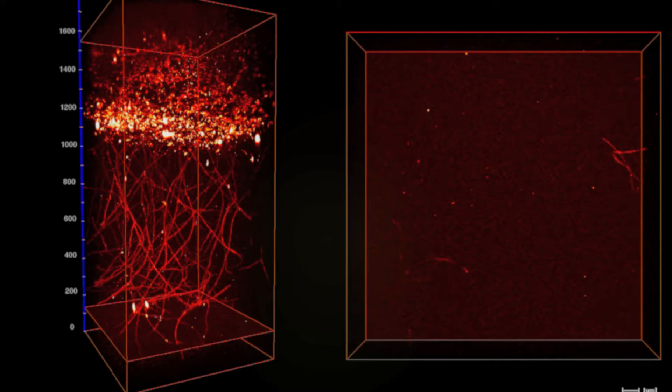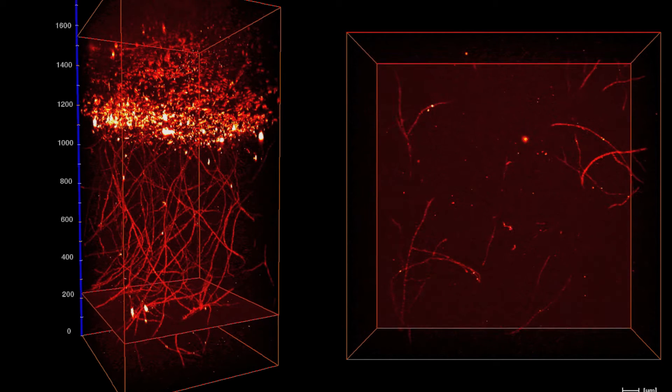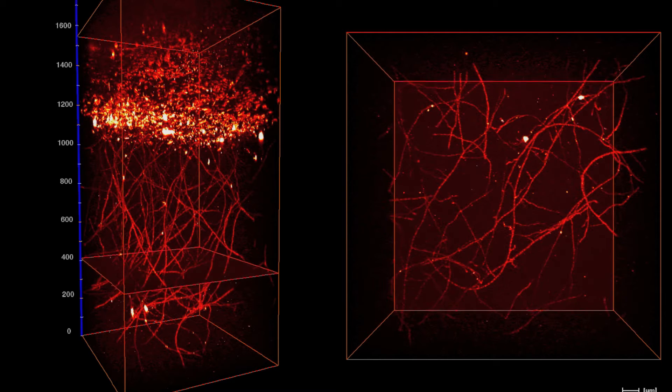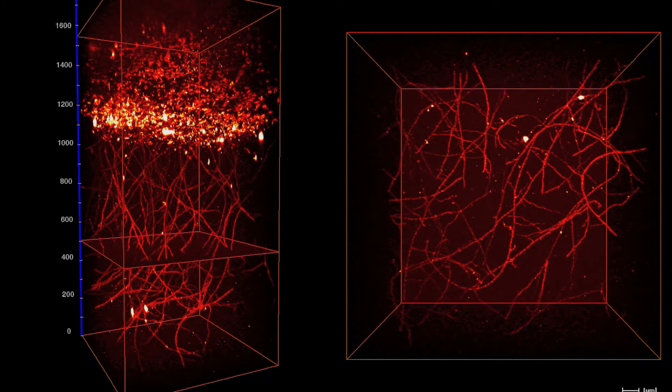To reconstruct a 3D image by 2-photon fluorescence microscopy, the consecutive micrographs are stacked. In this image, the 1-micron sections were stacked up to approximately 1600 microns.